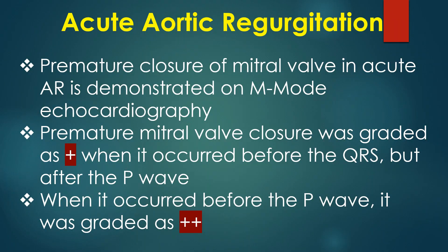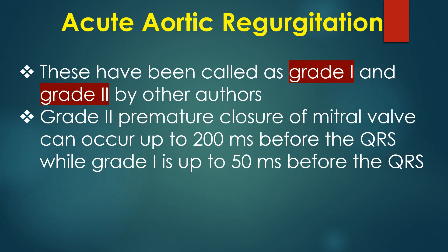Premature closure of mitral valve in acute AR is demonstrated on M-mode echocardiography. Premature mitral valve closure was graded as plus when it occurred before the QRS but after the P wave, and as plus-plus when it occurred before the P wave — called grade 1 and grade 2 by other authors. Grade 2 premature closure can occur up to 200 ms before the QRS while grade 1 is up to 50 ms before the QRS.